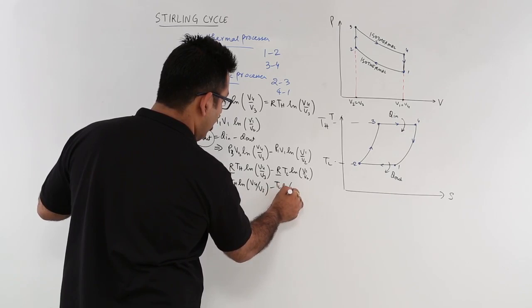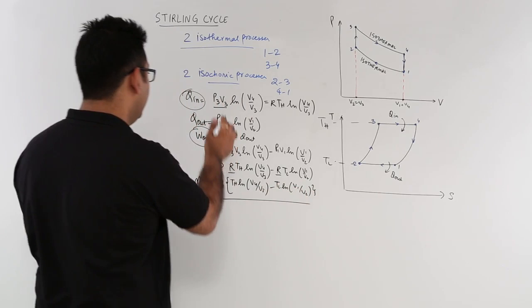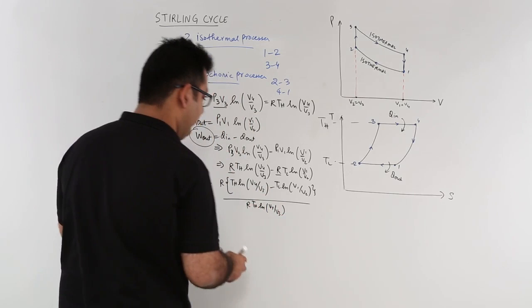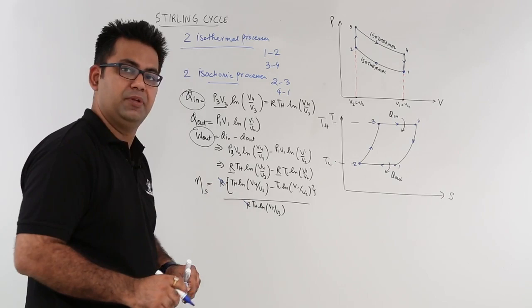Minus Tl natural log V1 by V2 divided by the amount of heat input, that is, R Th log V4 by V3. So now we can strike off R from this.